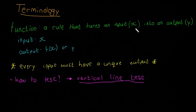So again, function is a rule that turns an input x into an output y. An output can be f(x) or y, the same thing. And again, every input must have a unique output. And how do we test this? What's the best way of seeing is something a function? It's called the vertical line test.